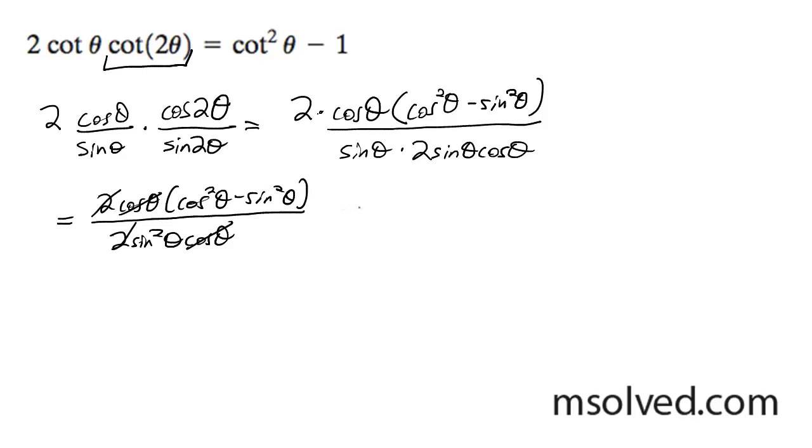So these cosines cancel each other out, these two's cancel each other out, so we're left with cosine squared theta minus sine squared theta all over sine squared theta.